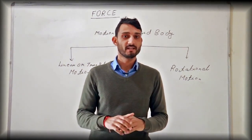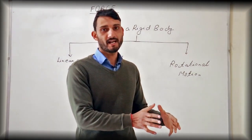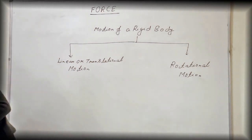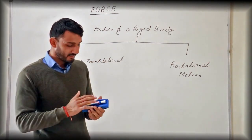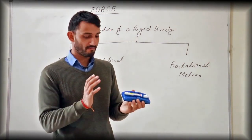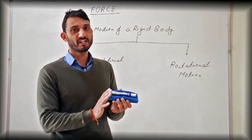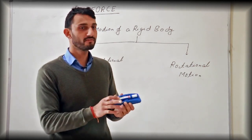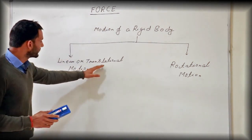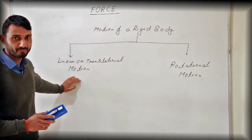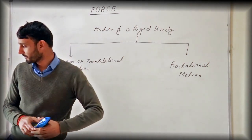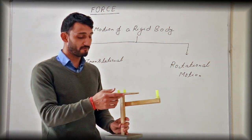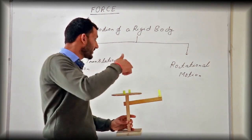For both types of motion, we need a rigid body and a force applied on that body. For example, we have a duster here and the duster is a rigid body. If we apply some force and the body is not fixed or pivoted at a point, it will do translational or linear motion. But if the body is pivoted at some point and you apply a force, it will do rotational motion.